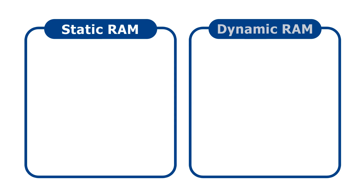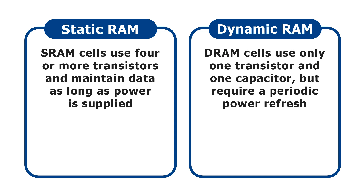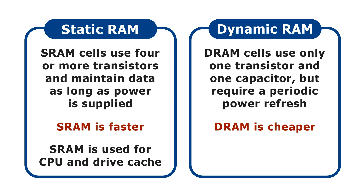The memory cells that store each bit of information in a RAM chip can be either static or dynamic. In static RAM or SRAM, each memory cell consists of 4 or more transistors that maintain data for as long as power is applied. In contrast, in dynamic RAM or DRAM, each memory cell is built from a single transistor and a capacitor that requires a periodic power refresh. Because SRAM does not have to be constantly refreshed, it is faster. However, SRAM is more expensive to manufacture than DRAM because more components are required to make up each memory cell. Because of this, SRAM is used to provide microprocessors and hard drives with some very fast internal storage called cache. However, most other computer RAM uses DRAM technology to provide the highest capacity for the lowest cost.